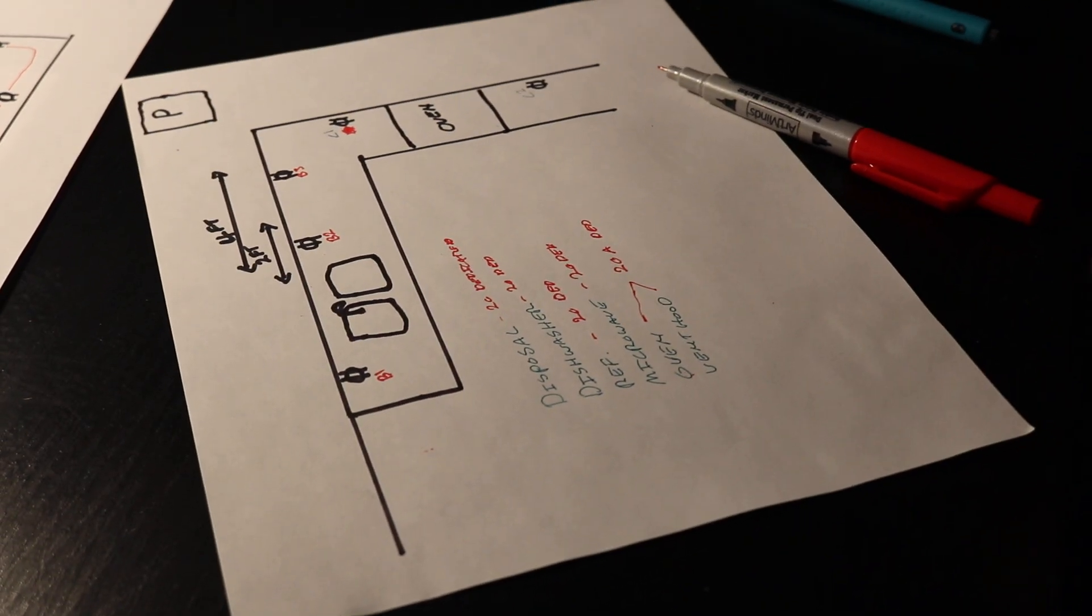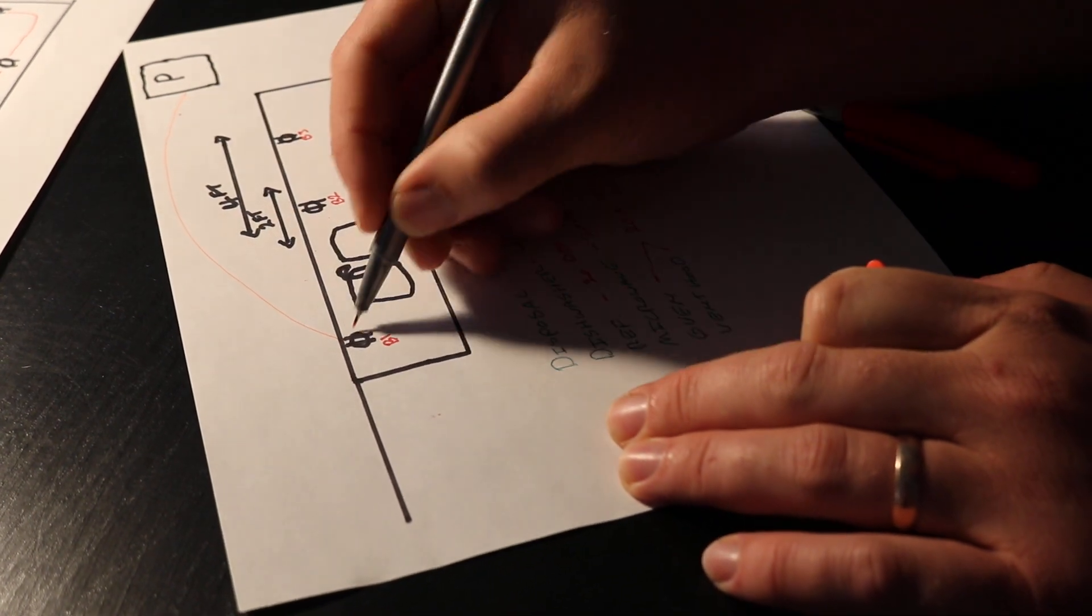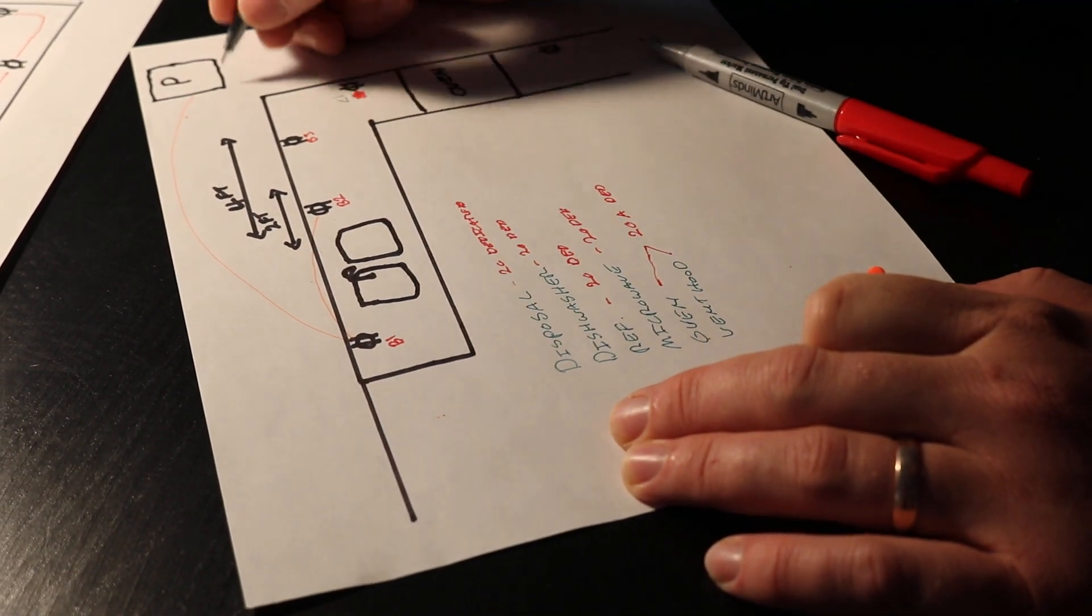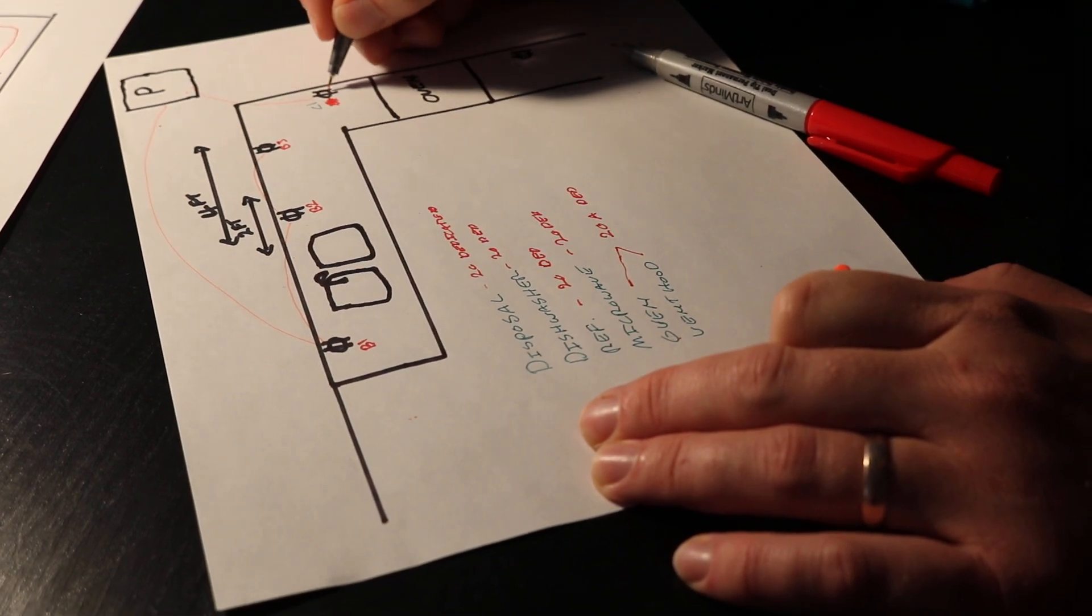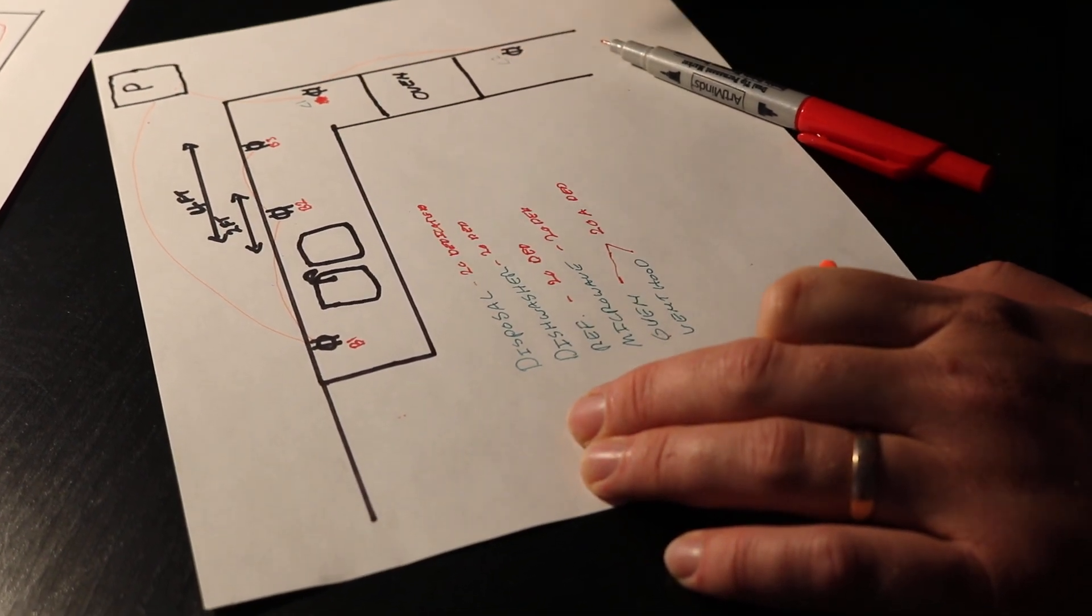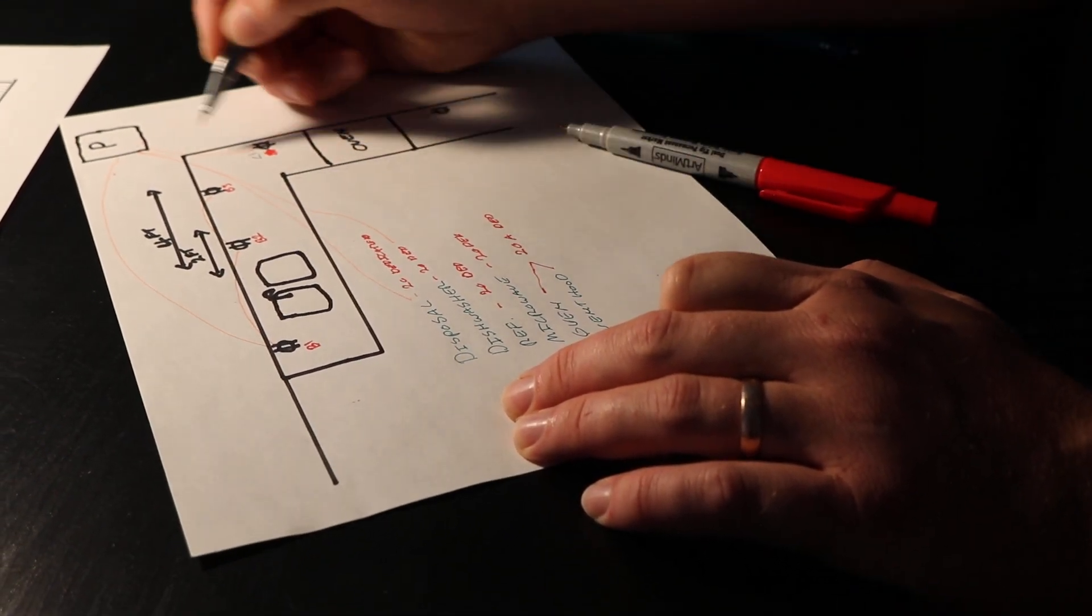So that's going to look something like this. You're going to have your panel. You'll have your home run going to your small appliance circuit. Then you're going to have your home runs going to each one of your appliances.